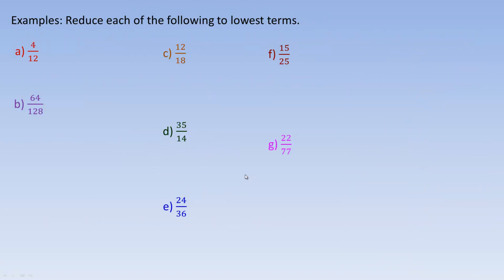Here are some examples on the next page: reduce each of the following to lowest terms. I'm going to talk more about the greatest common factor through examples A and B, and then we'll use that in the last five examples.